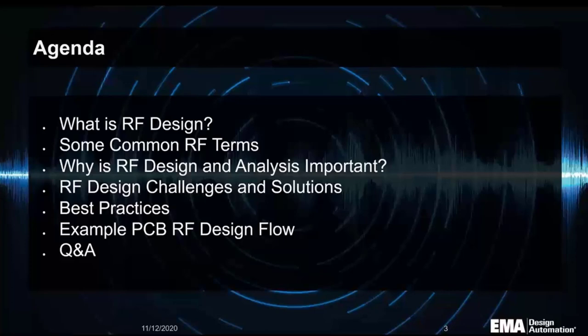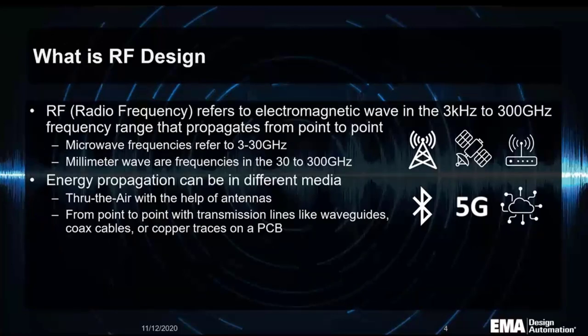We have a diverse group of attendees, so some of this might be a little basic. Radio frequency, or RF, refers to electromagnetic wave propagation in the three kilohertz to 300 gigahertz range. At low frequencies — radio or TV — that was done below three gigahertz in the kilohertz-megahertz ranges. But the microwave frequencies from three to 30 gigahertz have become very interesting, with applications like Wi-Fi, SATCOM, and Bluetooth all operating in that frequency range.